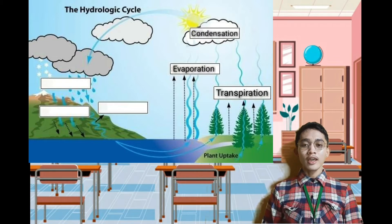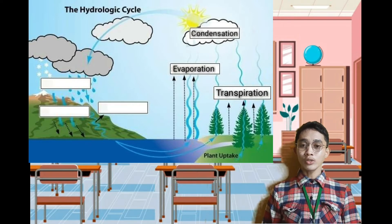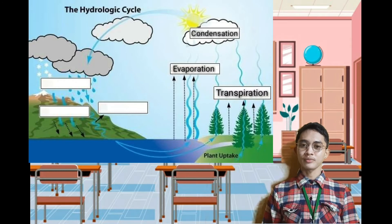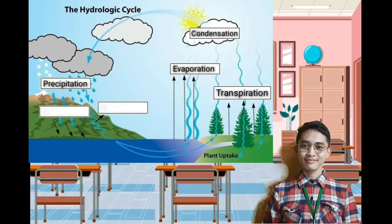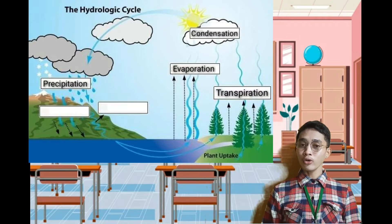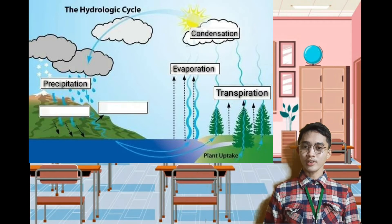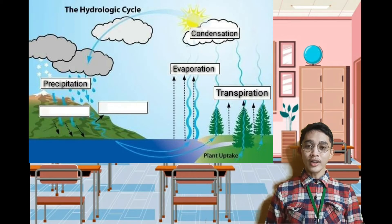Number four: it is any type of water that forms in the earth's atmosphere and then drops onto the surface of the earth. That's correct class — precipitation. Number five: is the flow of water occurring on the ground surface from rainwater or other sources? That's correct — runoff.